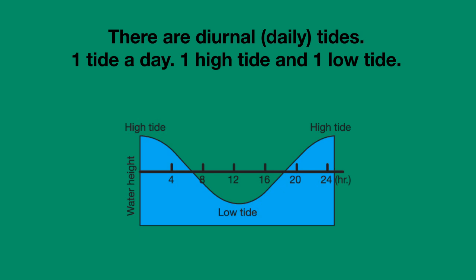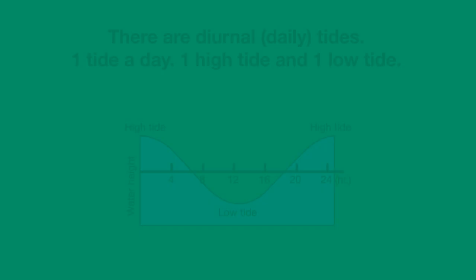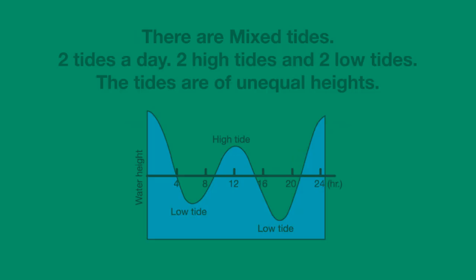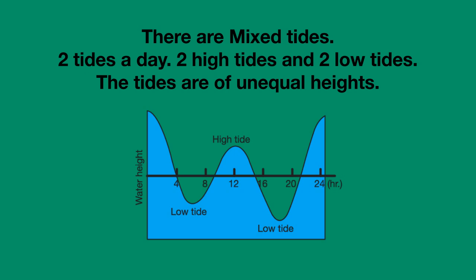There are diurnal, or daily, tides — a pattern of only one tide a day: one high tide and one low tide. And there are mixed tides: a pattern of two tides a day, two high tides and two low tides, but the tides are of unequal heights.